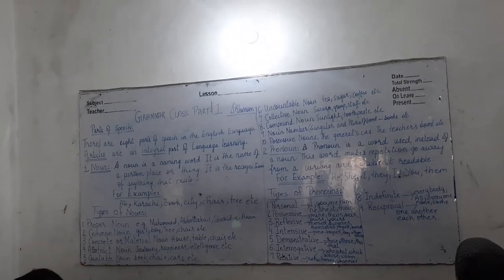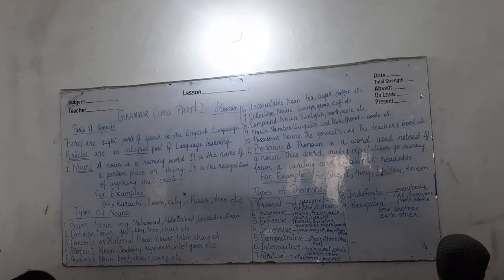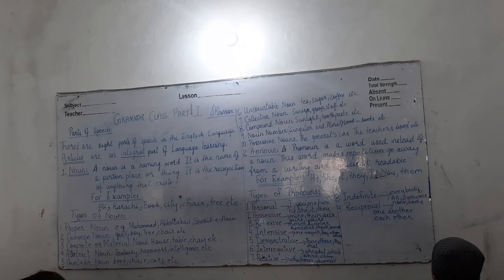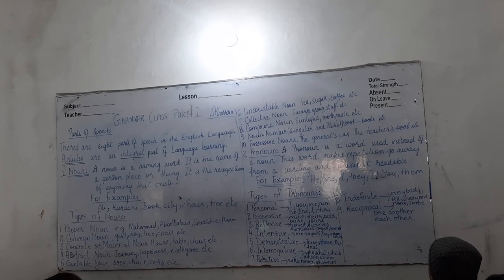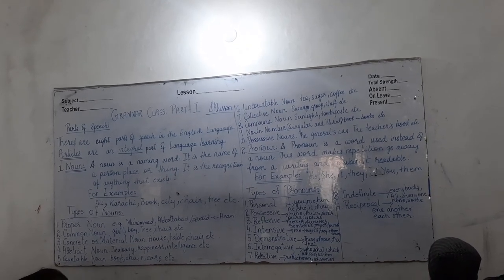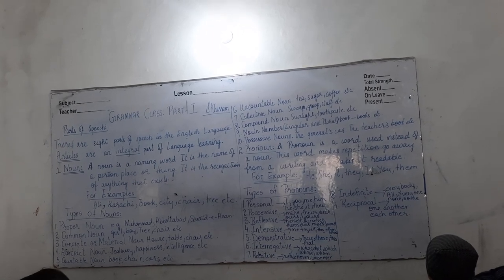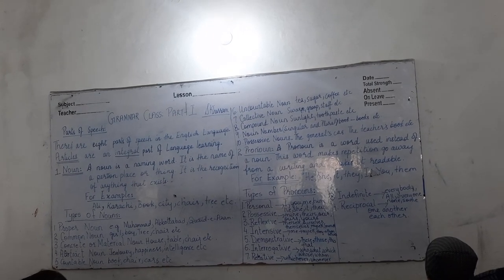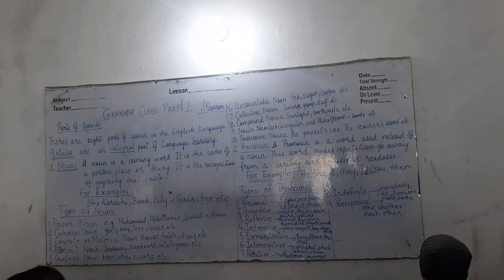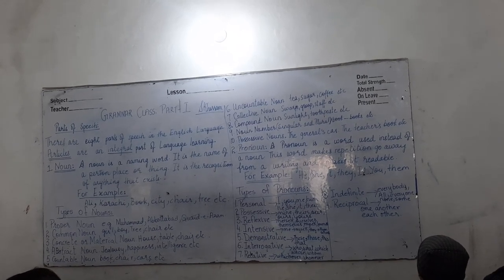Coffee — again, you need a bottle or a cup. Number seven is collective noun. This is one word used for a number of things. For example: a swarm of birds, a group of people, a staff of teachers, etc. This is one word which is used for a number of people.